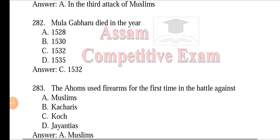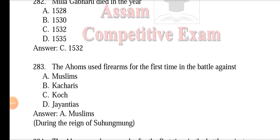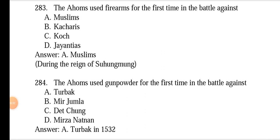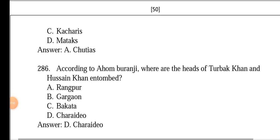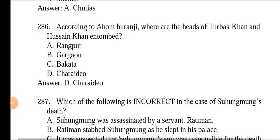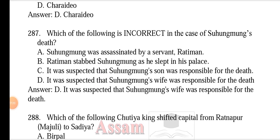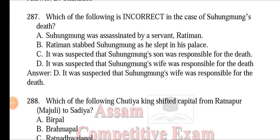Mula Gabaru died fighting against Turbak Khan in the third attack of the Muslims in the year 1532. The Ahoms used firearms for the first time in battle against Muslims during the reign of Suhum Mong. The Ahoms used gunpowder for the first time in the battle against Turbak in 1532. According to Ahom Buranji, the heads of Turbak Khan and Husain Khan are entombed in Sirai Dev. Suhum Mong was assassinated by a servant named Ratiman, who stabbed him as he slept in his palace; it was suspected that Suhum Mong's son was responsible for the death.